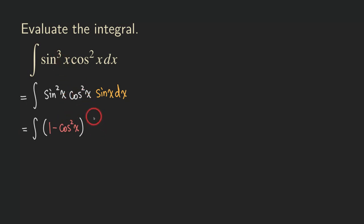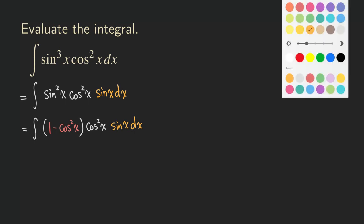Now the cosine squared x is just right here, so we leave it there. And of course there is still that sine x and dx that we didn't touch. At this point, we are going to perform the u-substitution.